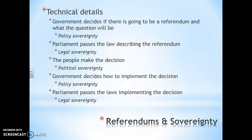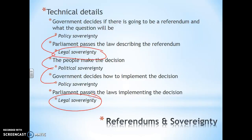The government decides that there's going to be a referendum — that's policy sovereignty. Parliament then passes the law describing the referendum — there we have legal sovereignty. The people make the decision, so here we have the political sovereigns exercising policy sovereignty. That then goes back to the government, the government decides how it is going to be implemented, and then parliament passes the law. So there are many different stages in a referendum. You can see how policy sovereignty moves around and legal sovereignty should not be overlooked — and of course that is directly relevant to the 2016 Brexit referendum.